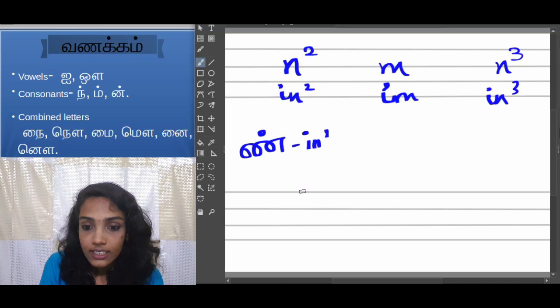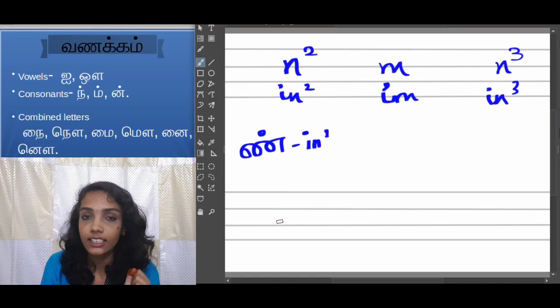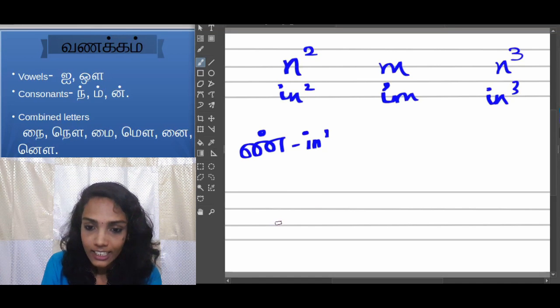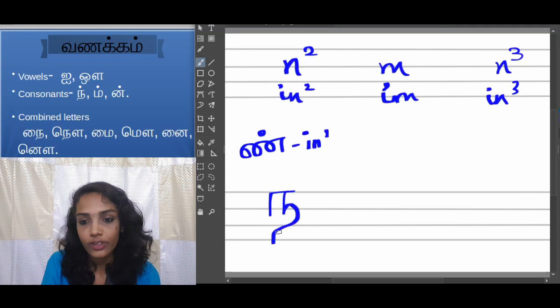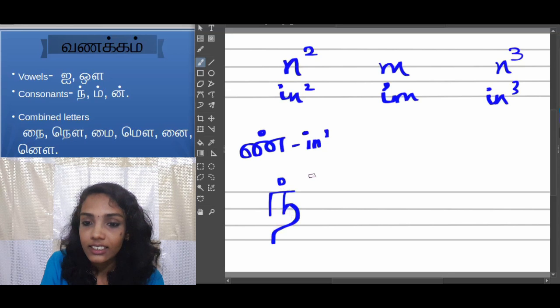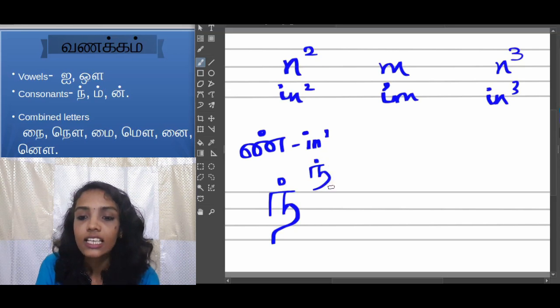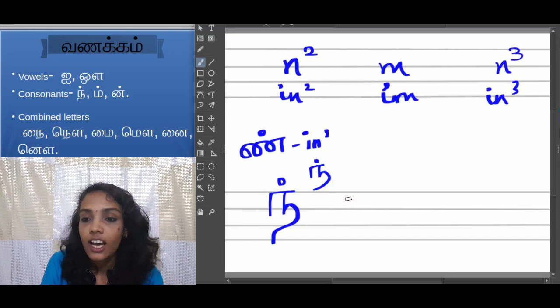Coming to the writing, this is how we write N2. So you write a supporting letter and single stroke like this. That's it. This is N. I am writing this again.